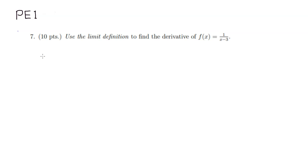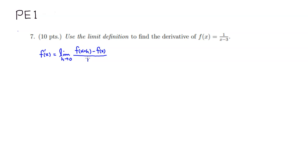Remember that the definition of the derivative is: f prime of x is equal to the limit as h approaches 0 of f of x plus h minus f of x, all over h. I'm going to write down the definition first and then use this formula.